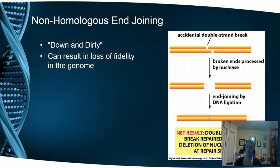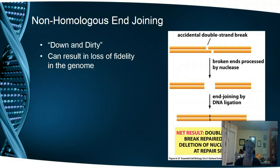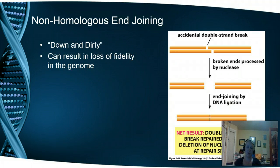The first repair method is non-homologous end joining. When we get an accidental double-stranded break, this is the down and dirty method of fixing things, and it can result in a lot of loss of fidelity within the genome. This one causes a significant amount of DNA loss, which may explain why we have a lot of junk DNA in our genome — because over years and generations, genes that were once functional are no longer functional because we've lost a section of information. What happens is nucleases will cut on both sides of the double-stranded break and then sew the chromosome back together, so we lose a chunk on either side.